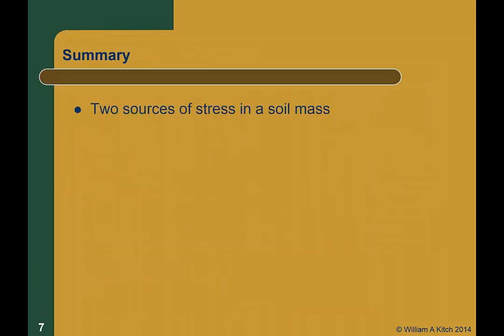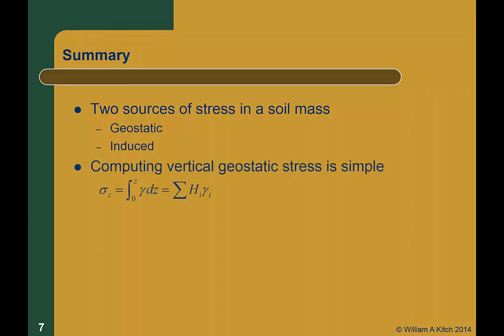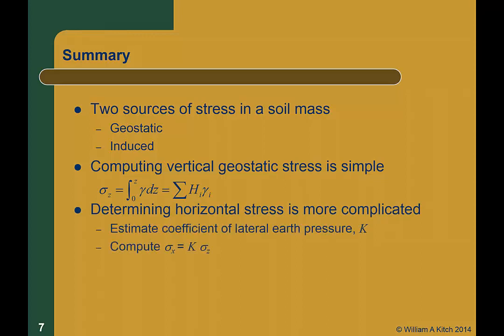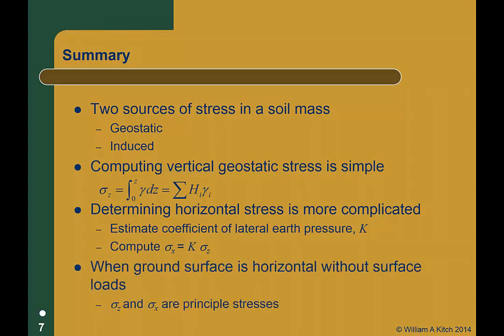To summarize: there are two sources of stress in soils — geostatic stresses that are naturally occurring, and induced stresses from surface loads. Vertical geostatic stress is simple to compute: technically it's the integral of gamma dz, but practically it is almost always simplified as the summation of h_i times gamma_i. Determining the horizontal geostatic stress is much more complicated — we estimate the coefficient of lateral earth pressure K, then compute sigma_x as K times sigma_z. When the ground surface is horizontal and there are no surface loads, the horizontal and vertical planes are principal planes, and sigma_z and sigma_x are principal stresses.